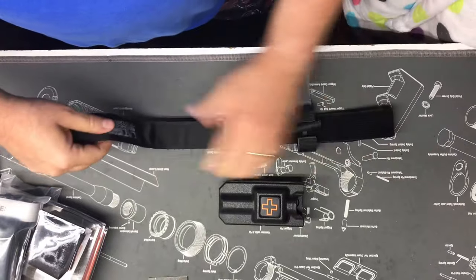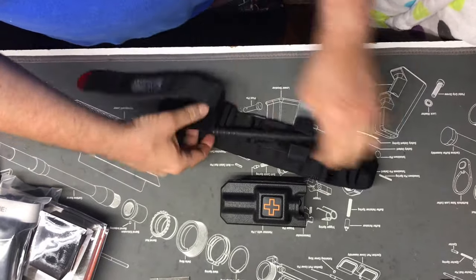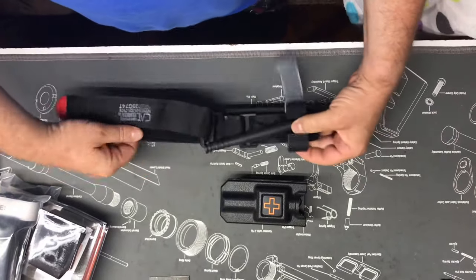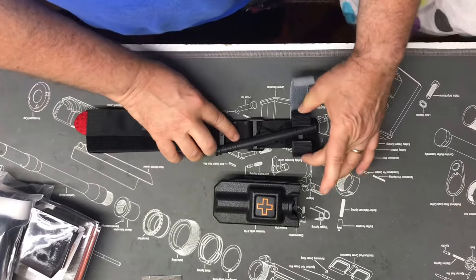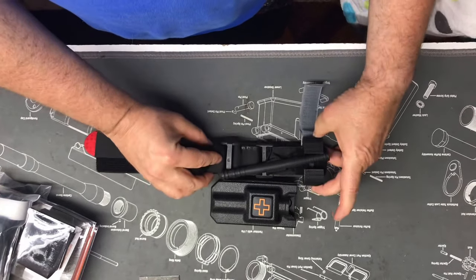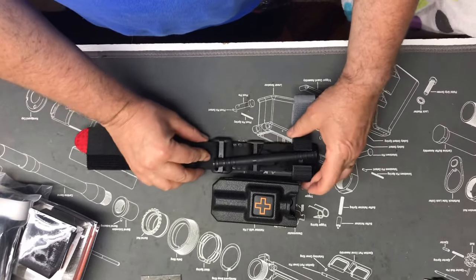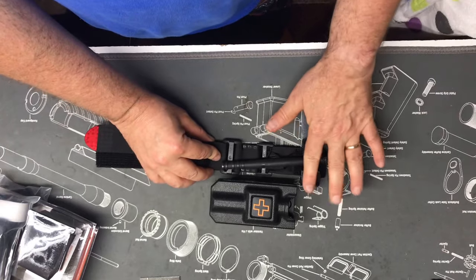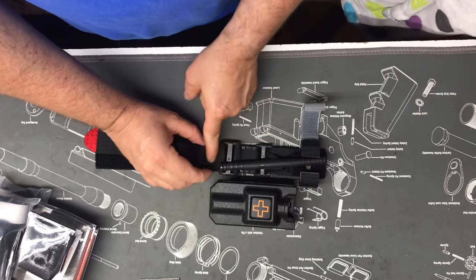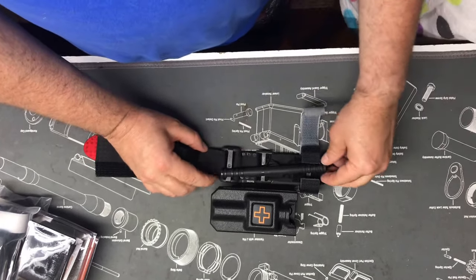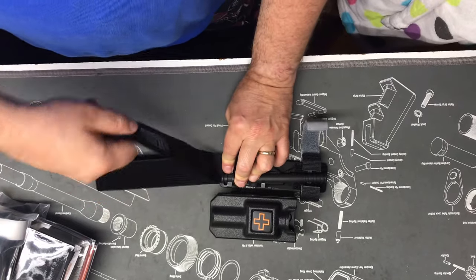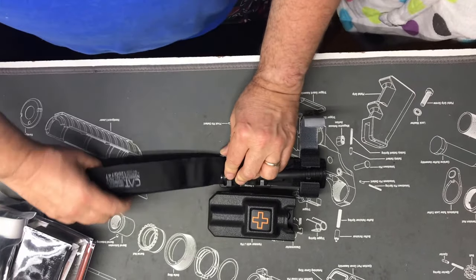First thing that I do is I've got a measure. The way I measure it is because this part of the CAT tourniquet actually sticks out of the case, I measure it from the top of the case right there to right about the bottom of the buckle.